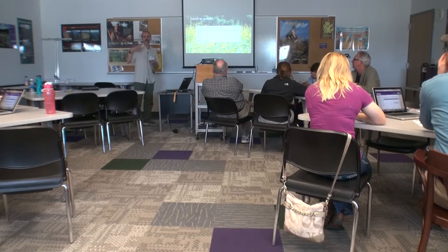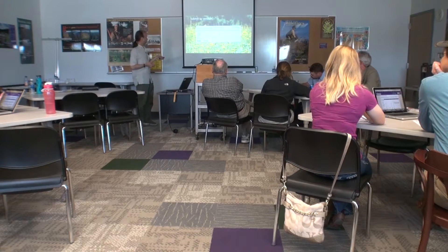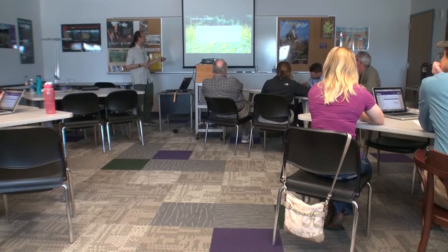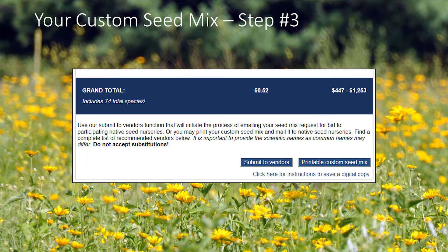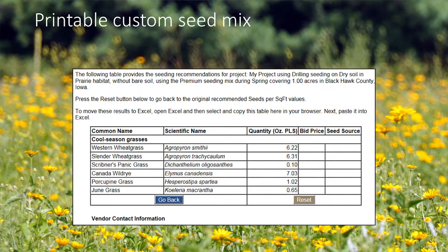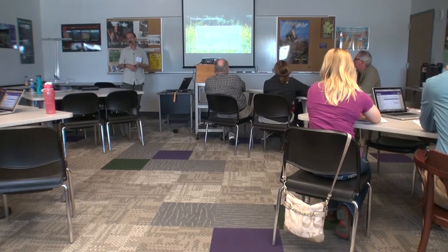When you click submit, it gives you a thank you screen with the option to go back and work on another project or return to your custom seed mix page. Another option is to create a printable version of the custom seed mix, which you can email to people or save as an electronic copy. When you click that button, it takes you to a screen that lists it all out — you can print it, or select it on screen, copy it, paste it into Excel, and have an Excel-based version.